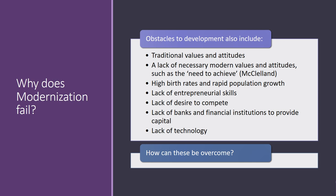There are other obstacles to modernization that other sociologists have discussed: traditional values and attitudes, a lack of modern values like the need to achieve and entrepreneurialism. Some sociologists point to high birth rates and rapid population growth, which means that surpluses are often given out to the poor to prevent revolution. There is also a lack of entrepreneurial skills and a lack of desire to compete in the developing world. Financial institutions and banks don't provide enough capital to these nations. There is a lack of technology — and while things like the internet and roads exist, they tend to be in cities, not rural areas — and as a consequence, modernization fails.